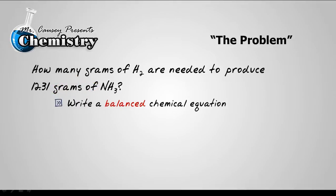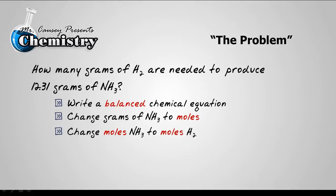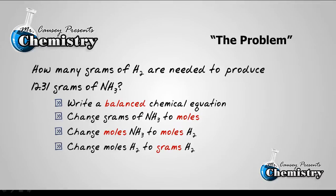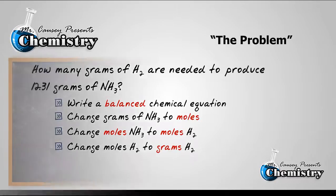So, let's lay out our plan here. Write a balanced chemical equation. Change grams of NH3 or ammonia to moles. That's using our molar mass. Then change moles of ammonia to moles of hydrogen. That's the magic. That's the mole ratio that we're going to use there. And then change the moles of hydrogen to grams of hydrogen and that's the molar mass again. With that plan, let's go to the magic blackboard.